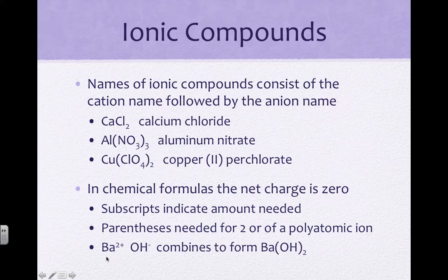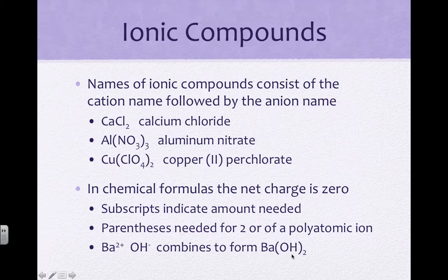The subscripts in formulas indicate the ratio necessary for the net charges to add up to zero. For example, barium has a +2 charge and hydroxide has a -1 charge, so you need two hydroxides for every one barium — represented as Ba(OH)2. For polyatomic ions only, if you need more than one, use parentheses. If you only need one hydroxide, then parentheses are not used.